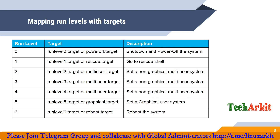If you set run level 5 or graphical target, it starts the system in graphical user mode so you can access the GUI on your Linux server. If you set run level 6 or reboot target, the system will reboot. This is basically how the run levels map to targets — you can use either run level 0 target or poweroff target, both will work.